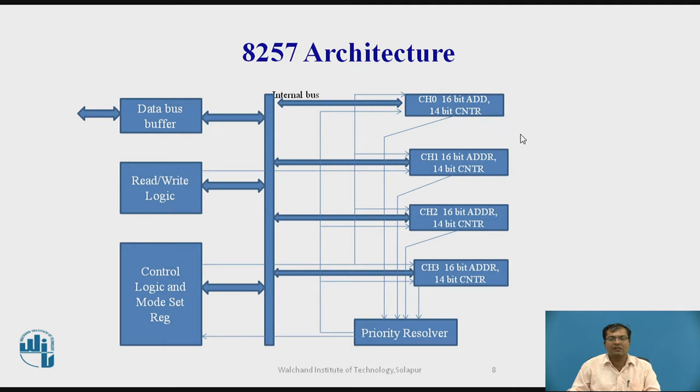Now the external I/O devices, they are communicating through different channels, these four different channels. Request is assigned. The priority resolver solves their request based on priority which is assigned. Then it sends the signal to the control logic and mode set register. Then it generates the appropriate signal for its respective channels, which one should be in action.